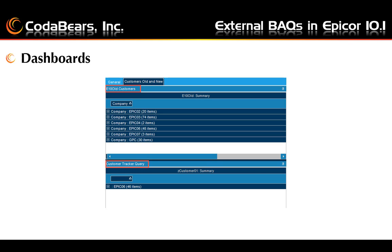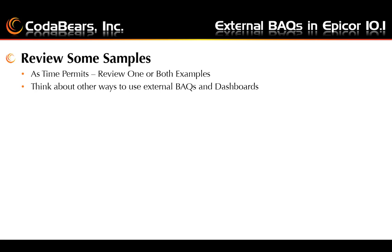Here is an example of a dashboard that shows both an external query and an internal query. The top portion has the older version of ETN customers and the internal query has the 10.1 customer data for just this company — both on the same dashboard. This is just a quick example, but it demonstrates that you could view old data and new data in a single dashboard. Next we'll review some examples and show the setup in actual Epicor software.